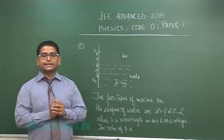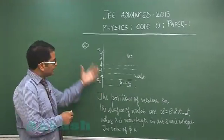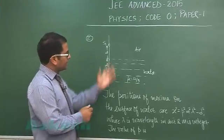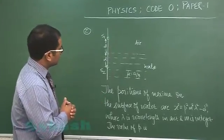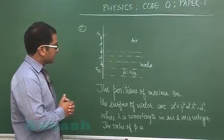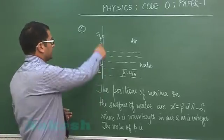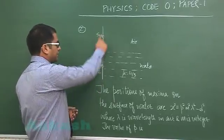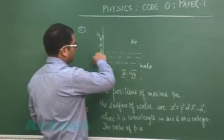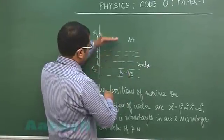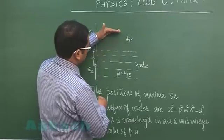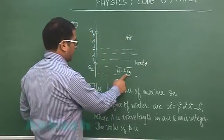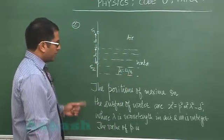Question number two is from optics, specifically wave optics. From the figure itself, we can conclude it's from Young's double slit experiment. These are two slits separated by 2d, and right from the middle there are two different media: one is air, the other is water having refractive index 4 by 3.